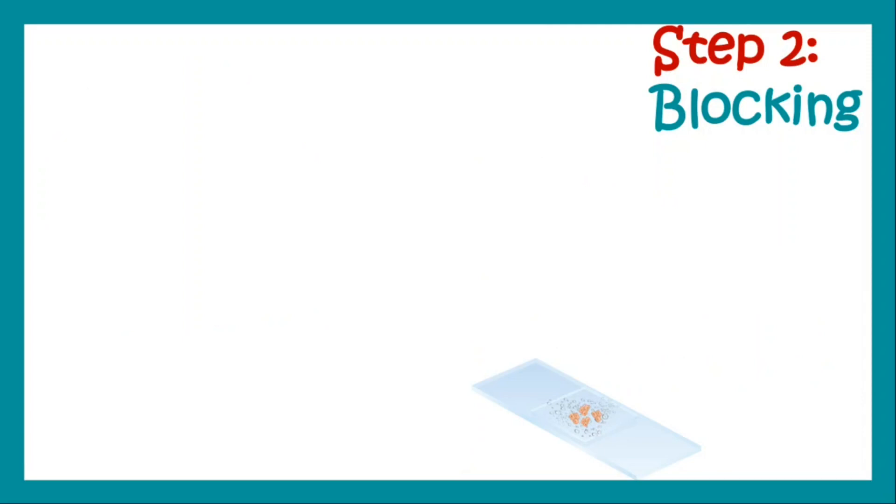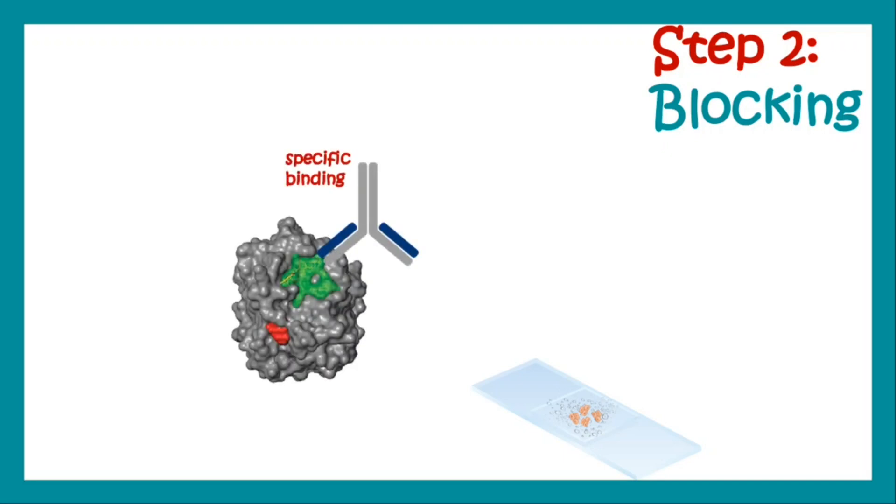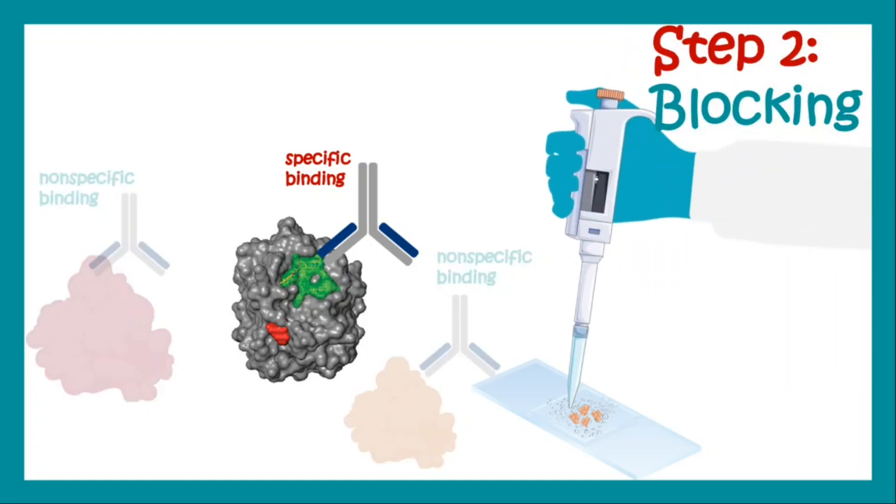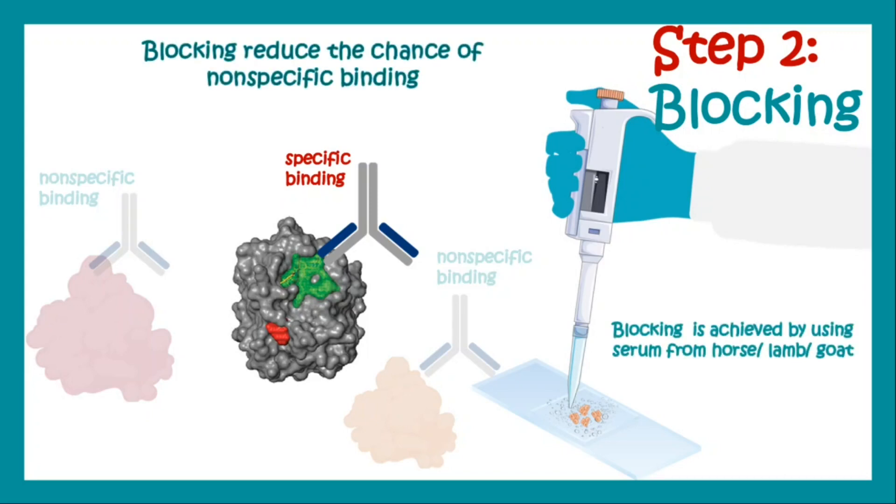In step 2 we do blocking. Whenever we do antigen-antibody interaction, most of the times specific antigens bind to antibodies, but in many situations we see a lot of non-specific binding that can give us erroneous results. To reduce that we add blocking agents which block or reduce the chances of non-specific binding.